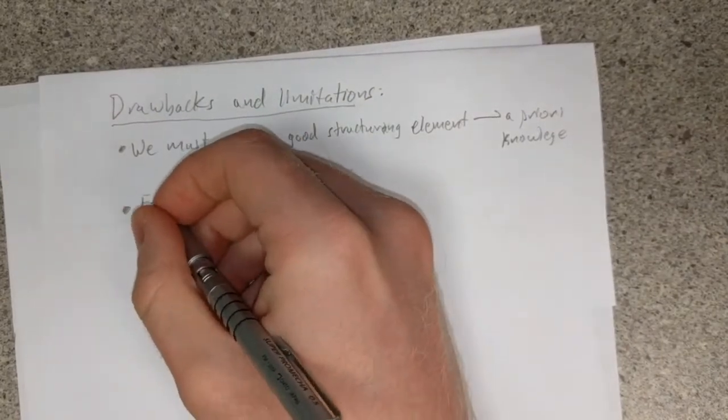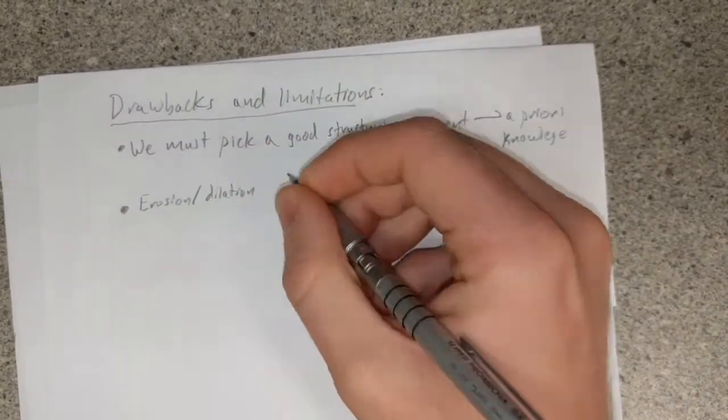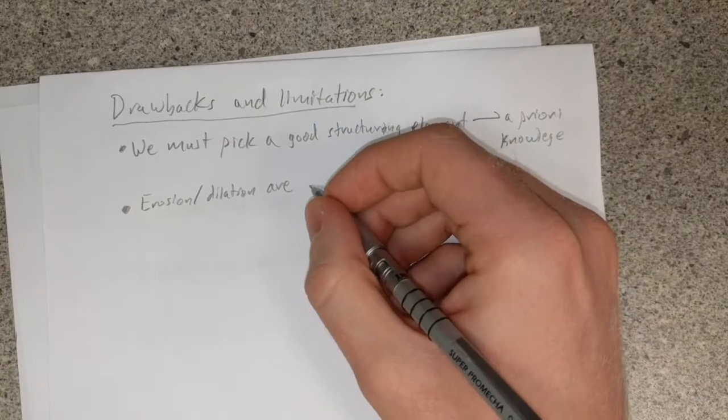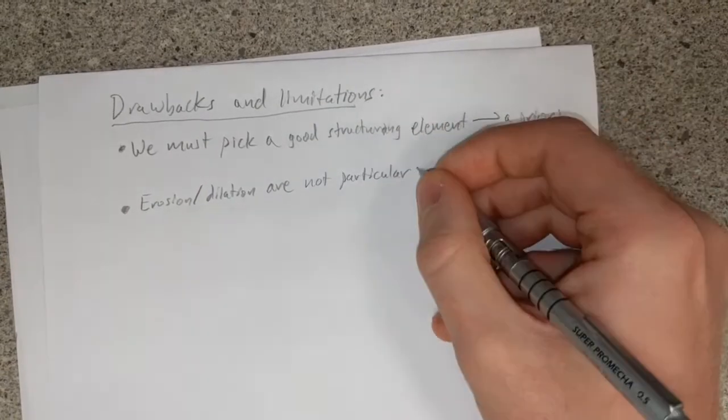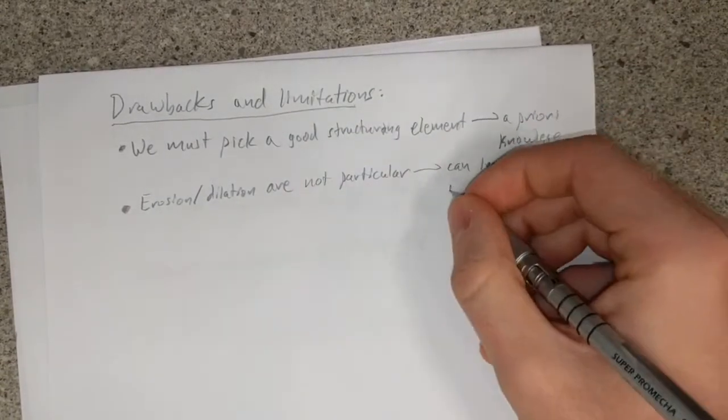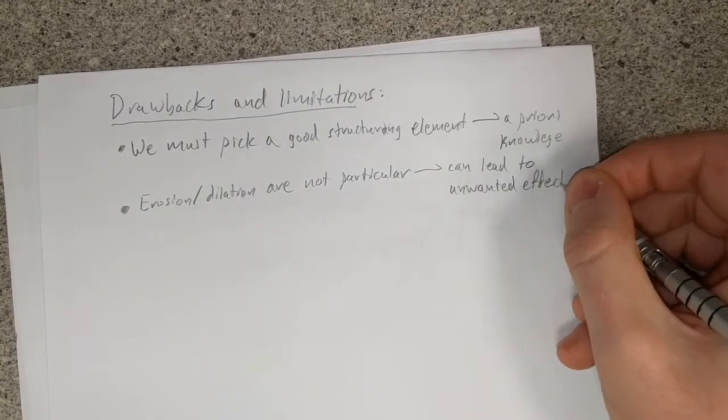All these methods affect all pixels equally. There is no form of detection for inconsistencies that could be real data. Eroding and dilating can thus introduce errors into the image that did not exist before.